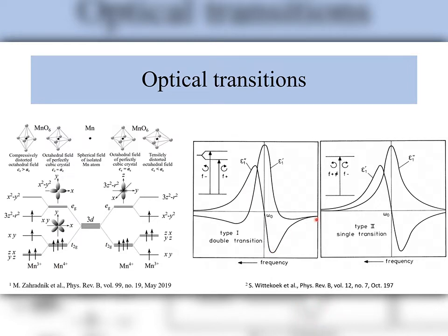The second type of transitions arises from splitting of the ground state, resulting in unequal oscillator strength for right-hand and left-hand polarized light. As the occupation of the split ground state is temperature dependent, so is the type 2 transition probability. These transitions are often called single transitions, or paramagnetic transitions, and manifest themselves as a dispersive relation in the real part and a bell-shaped curve in the imaginary part of the off-diagonal elements of the permittivity tensor.